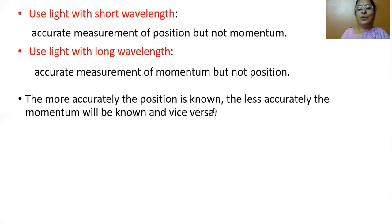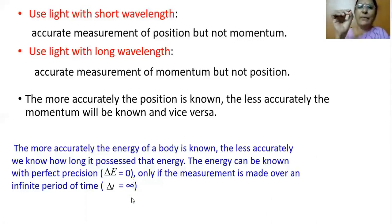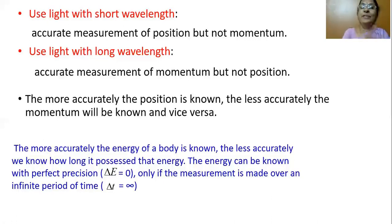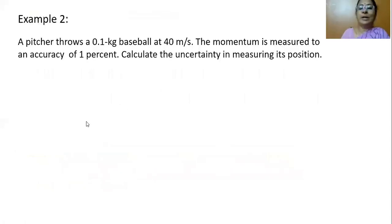Using light with shorter wavelength gives minimum uncertainty in measuring position but not momentum. Using light with long wavelength allows accurate measurement of momentum but not position. The more accurately the position is known, the less accurately the momentum will be known, and vice versa. Similarly, the more accurately the energy of a particle is known, the less accurately we know how long the particle possesses that energy — measuring energy perfectly requires measuring for infinite time.